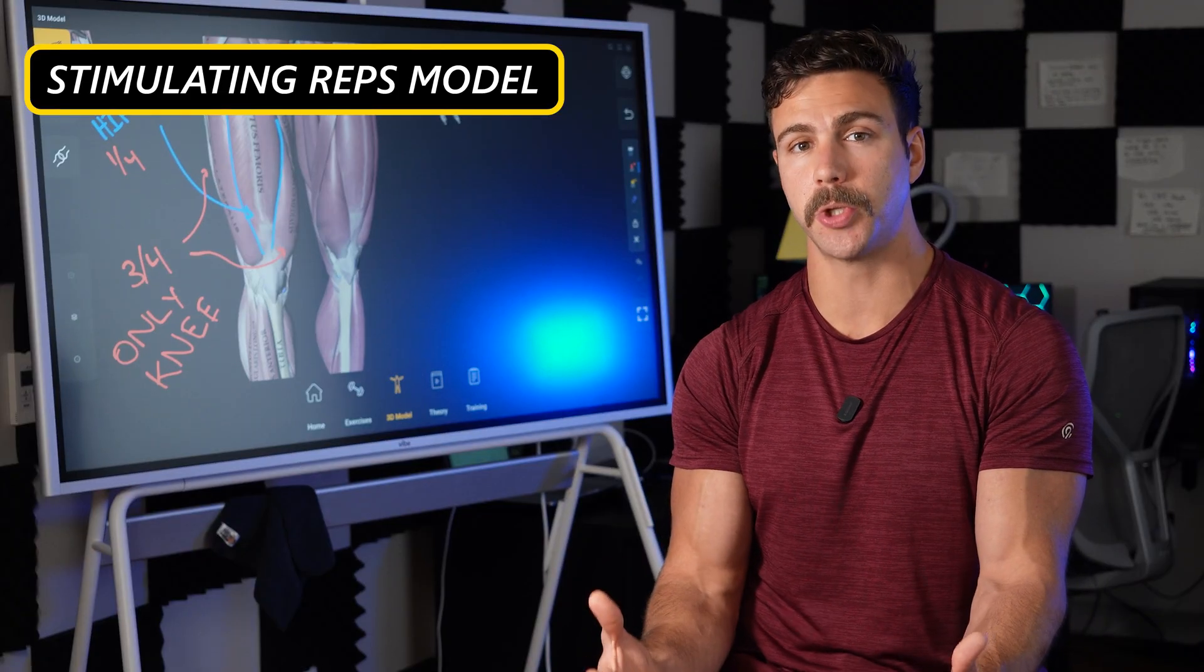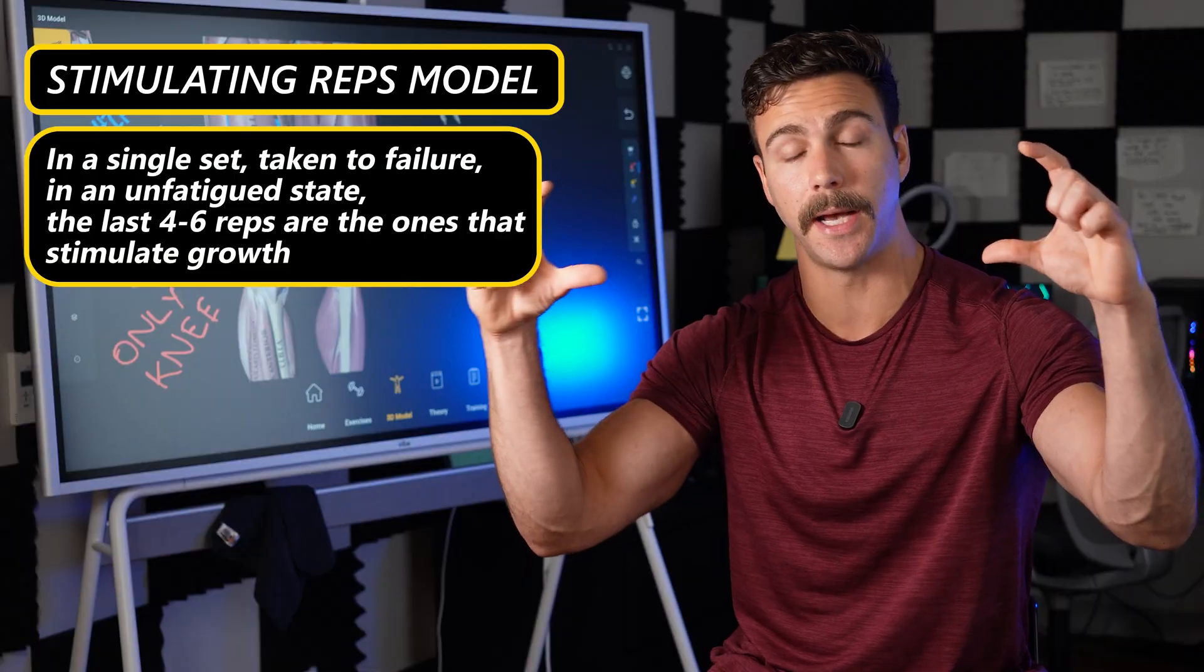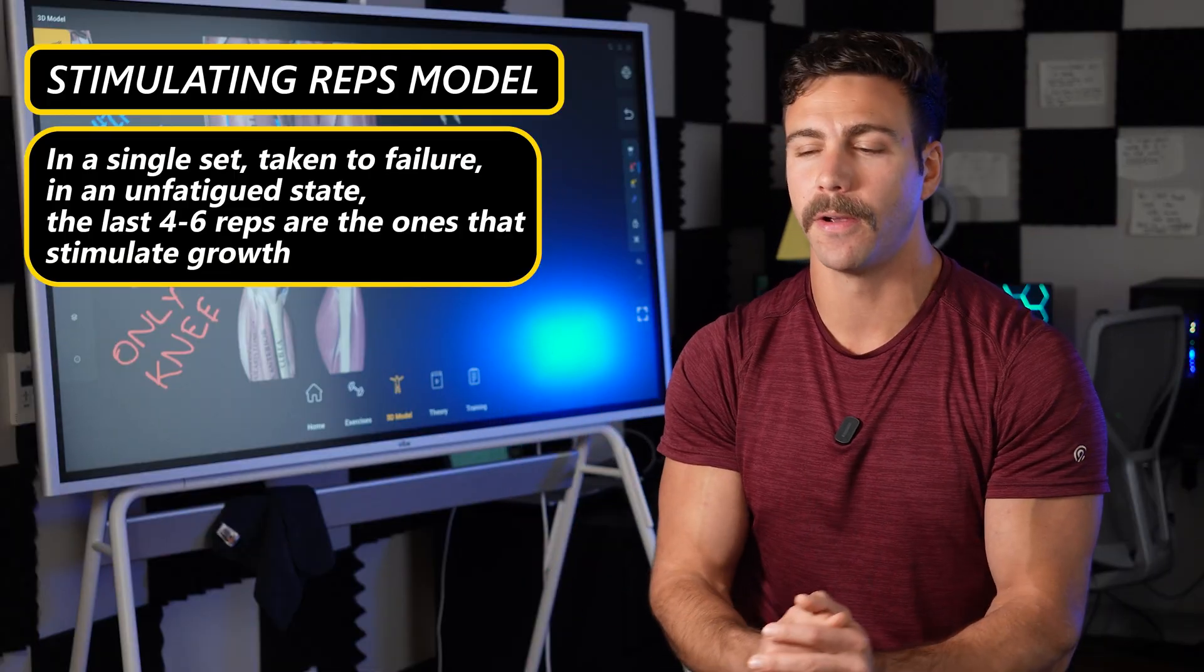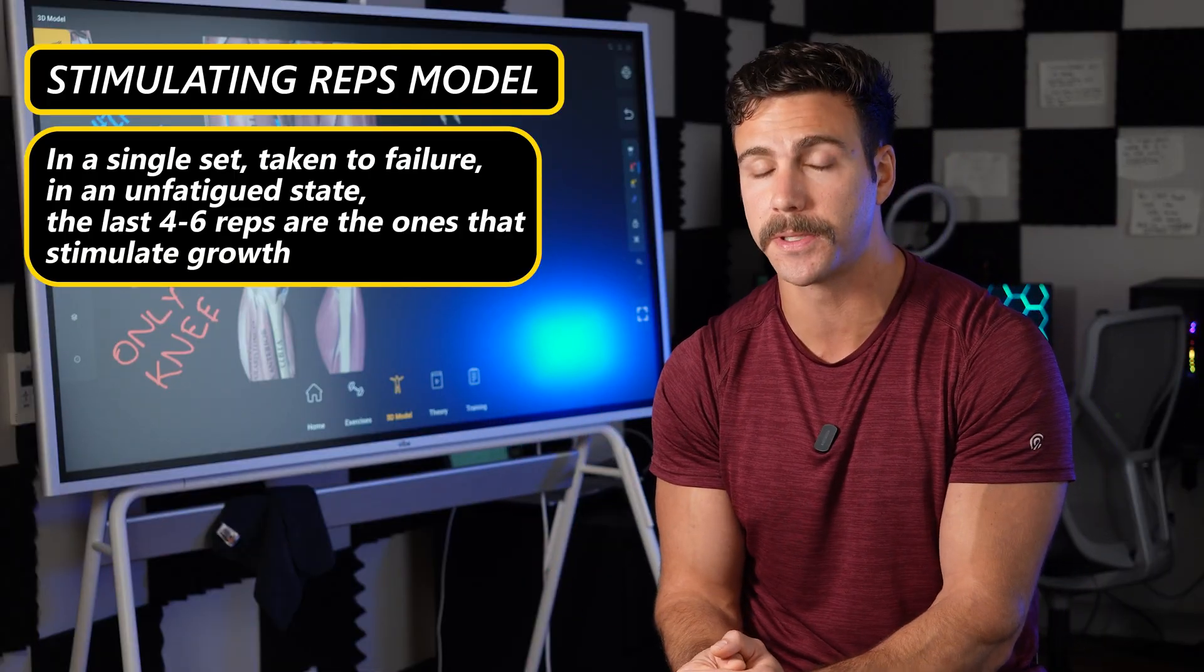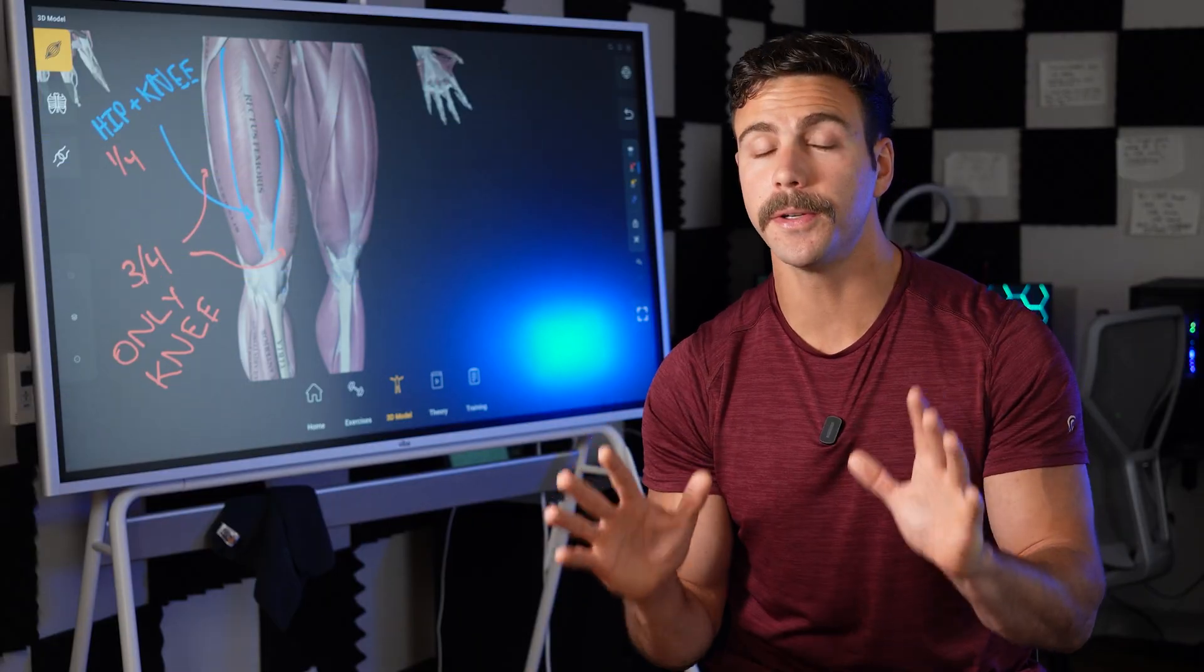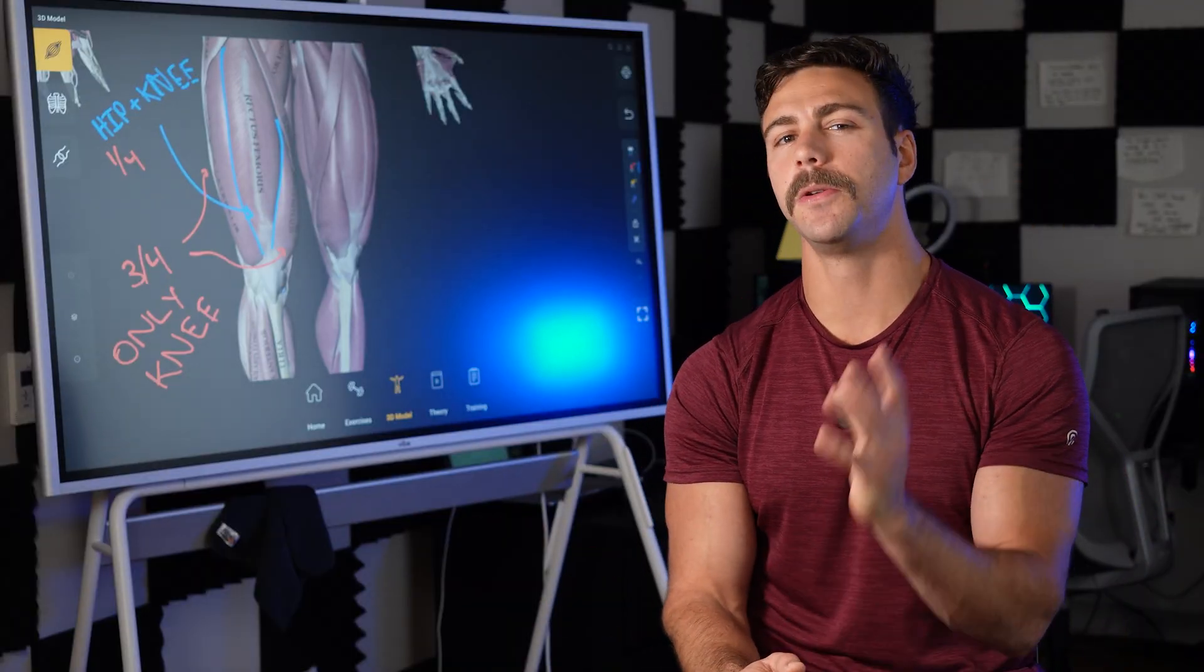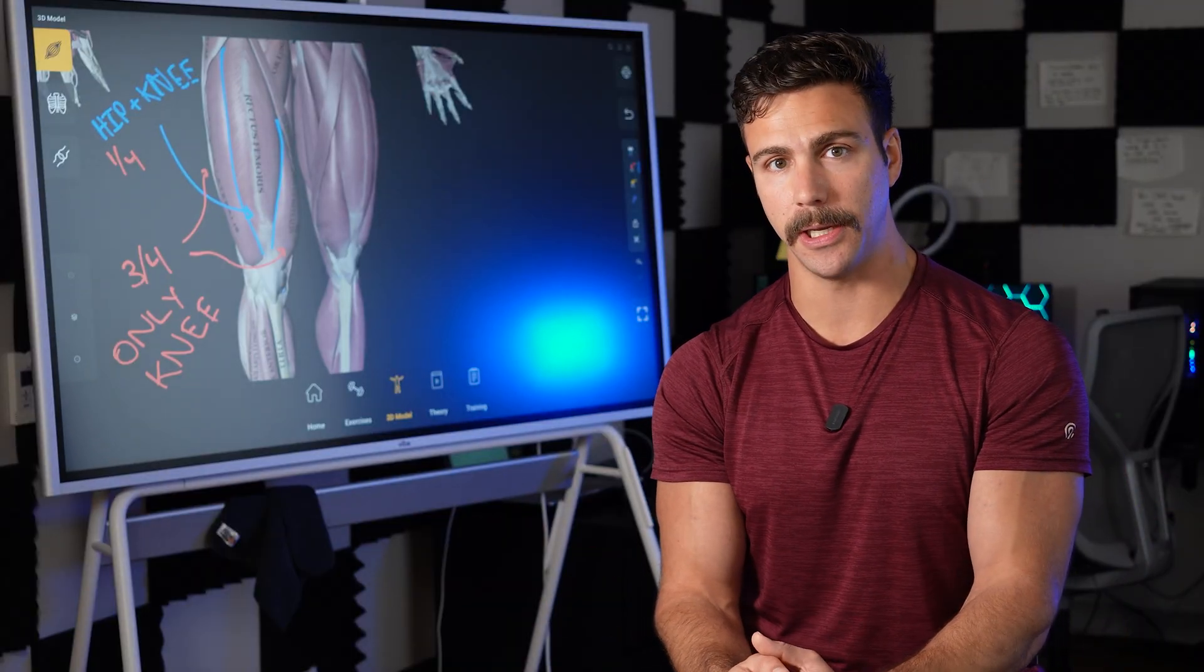At its core, what this model suggests is that in the context of a single strength training set taken to failure, the last four to six reps are the ones that are responsible for stimulating growth. But if your understanding just stops there, oh, the last five reps, then you can grossly misapply it to your training.